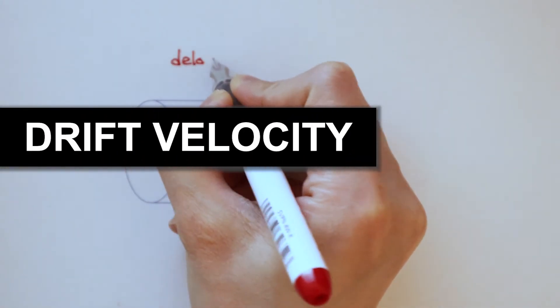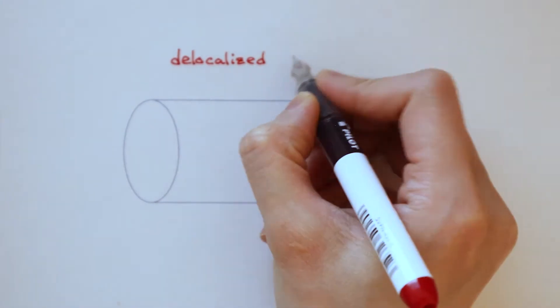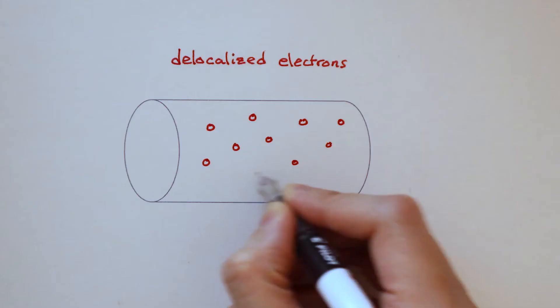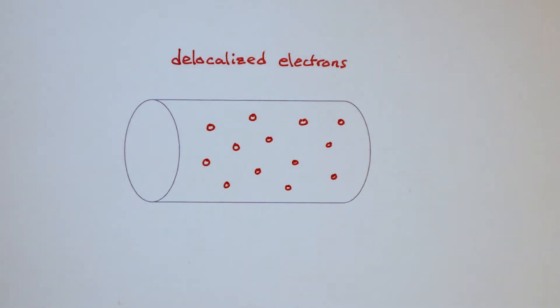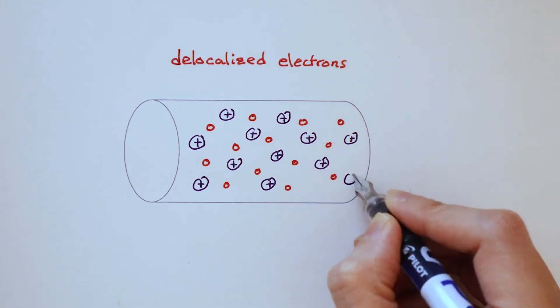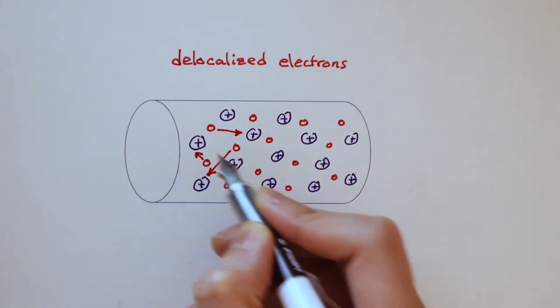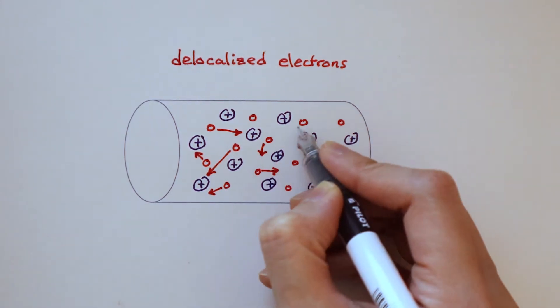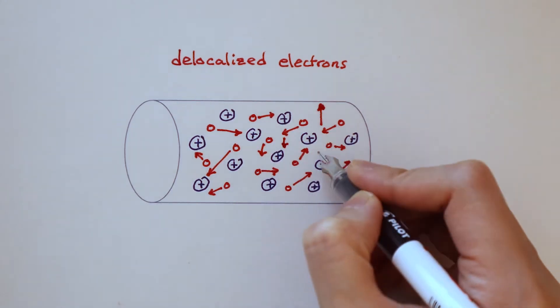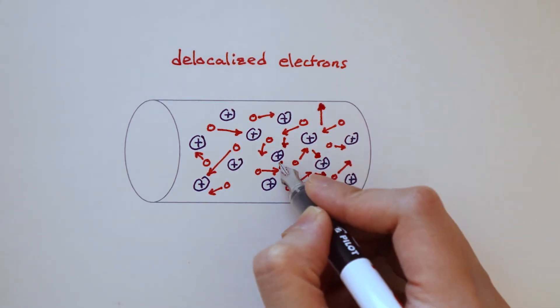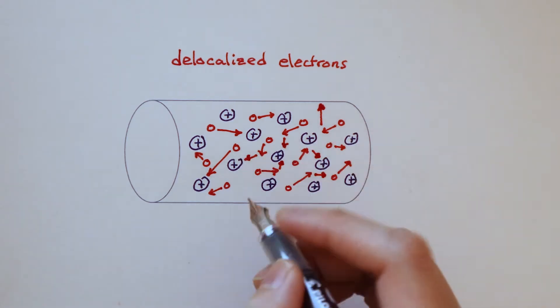Inside of a conductor, there are delocalized or free electrons. These electrons do not move in a straight line. That's because they collide into other particles within the conductor, such as ions. Each electron travels with a different velocity in a different path.